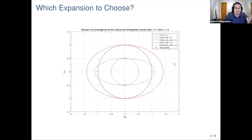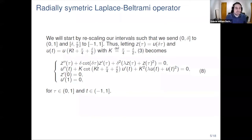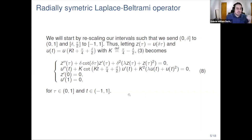For the interval zero to delta, for some value of delta that I define, I will use a Taylor expansion. On the remaining interval from delta to pi over two, I will use a Chebyshev expansion. I split the problem in two and rescale: the interval [0, delta] to [0, 1], and [delta, pi/2] to [−1, 1], where k equals pi over four minus delta over two. Our problem then becomes a system where the first equation corresponds to the Taylor expansion and the second to the Chebyshev expansion.